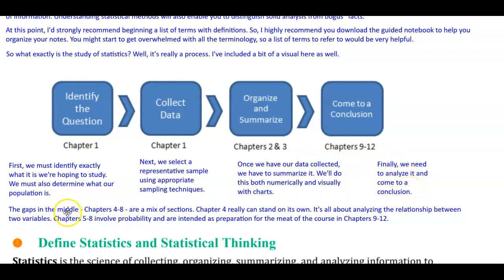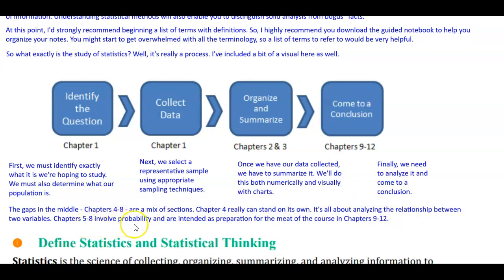The gaps in the middle — chapters 4 through 8 — are a mix of sections. Chapter 4 really can stand on its own; it's all about analyzing the relationship between two variables. Chapters 5 through 8 involve probability and are intended as preparation for the meat of the course in chapters 9 through 12.